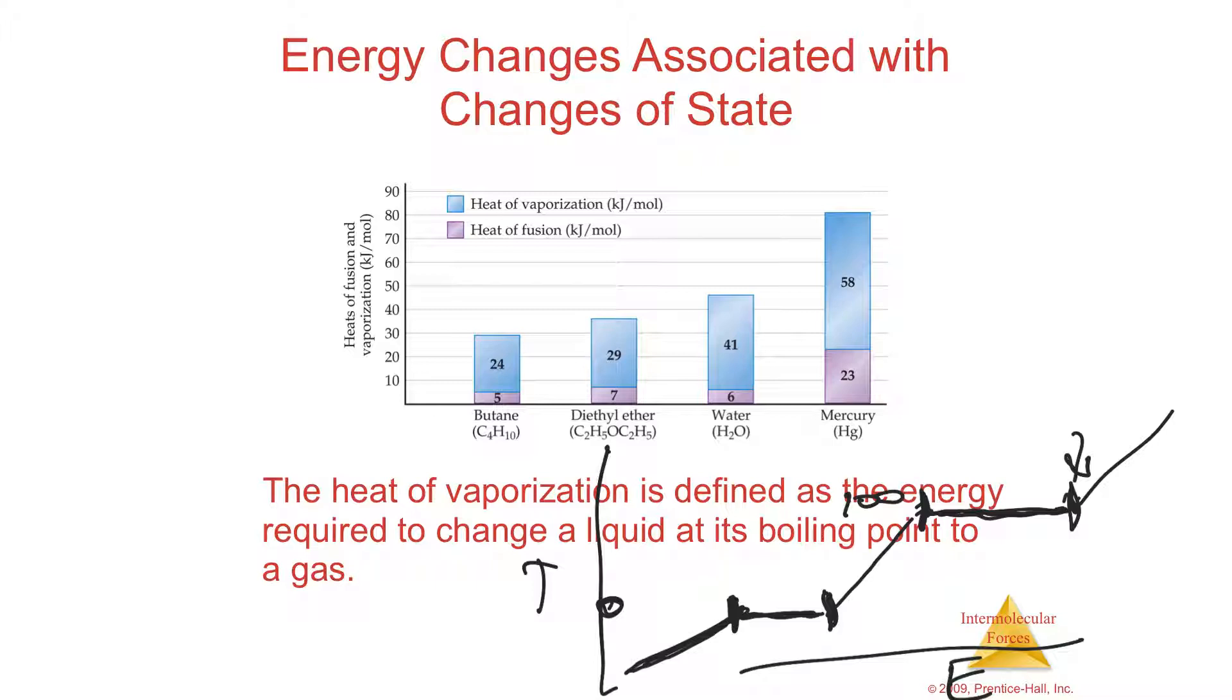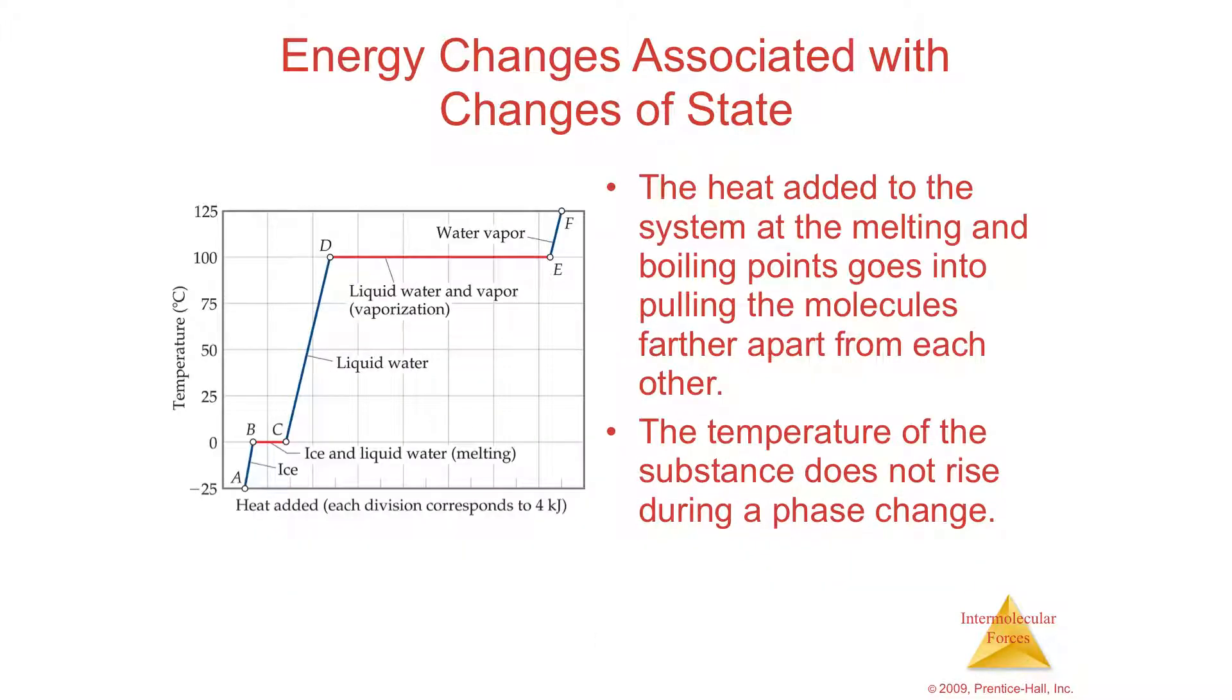That brings us to the next point, which has to do with these graphs. This is called a heating curve. And a heating curve will tell you that at zero, as soon as it's at freezing or melting, melting and freezing points are the same, then there is a certain amount of heat called the delta H of fusion, which is the heat required, or the energy required, not to raise the temperature, but just to melt the stuff.